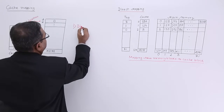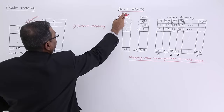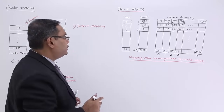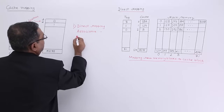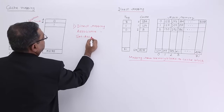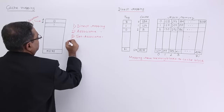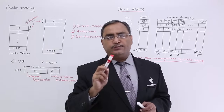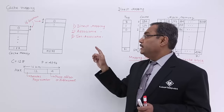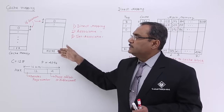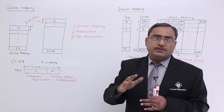The three types are direct mapping, which we are going to discuss right now; associative mapping, which will be covered in the next video; and set associative mapping after that. Let us concentrate on direct mapping. For all the mapping types, I shall take the same example so that you can see how the situations vary in different mapping schemes.